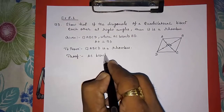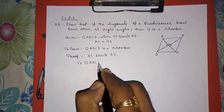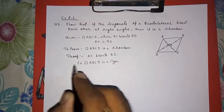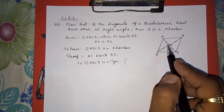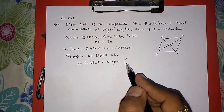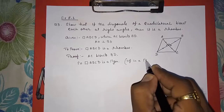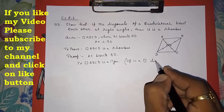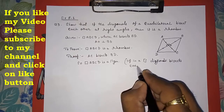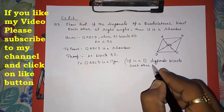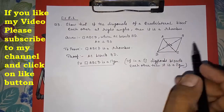We can say quadrilateral ABCD is a parallelogram because AC bisects BD. If the diagonals of a quadrilateral bisect each other, we can say it forms a parallelogram, as learned in Theorem 8.7 in your textbook: if in a quadrilateral the diagonals bisect each other, then it is a parallelogram.